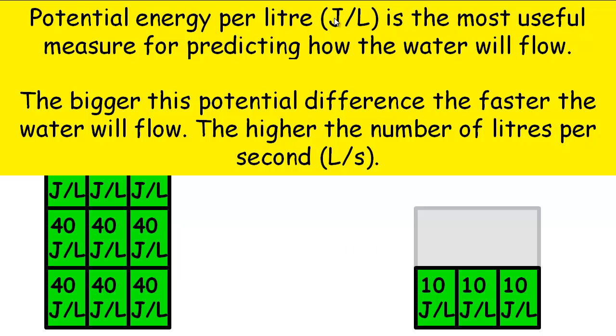So potential energy per litre, or joules per litre, is more useful for predicting which way the water will flow. I think you can also see that if we made this cup taller and taller and taller and filled it up, the bigger the potential difference, or the difference in energy, between this cup and this cup, the faster the water would flow as well, or the higher the number of litres per second you'd get.